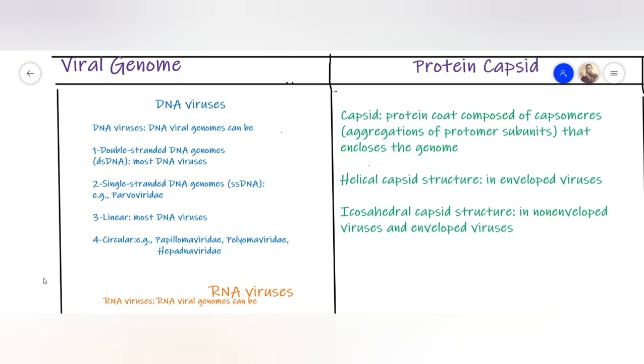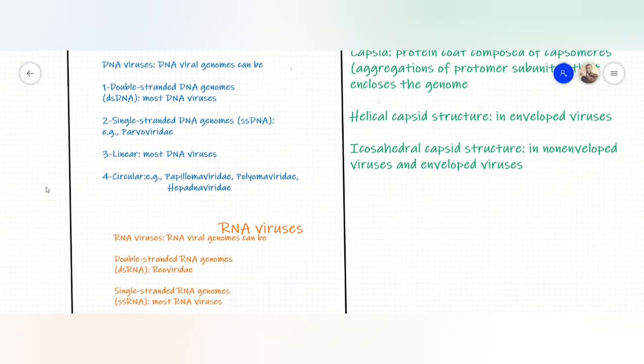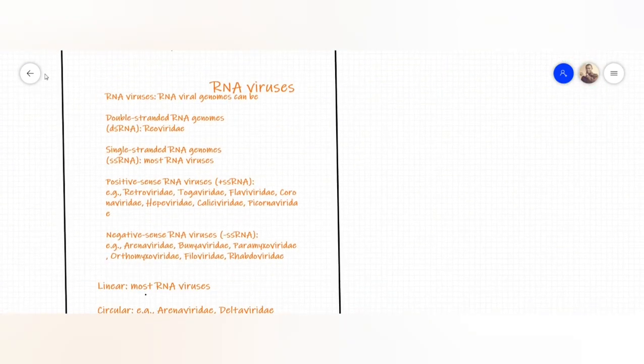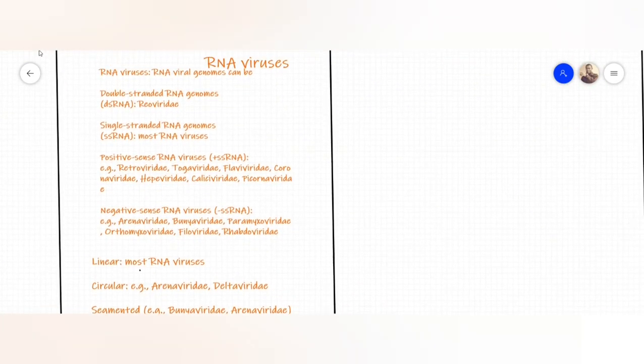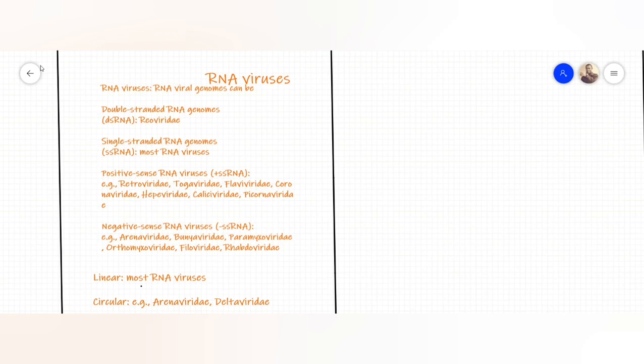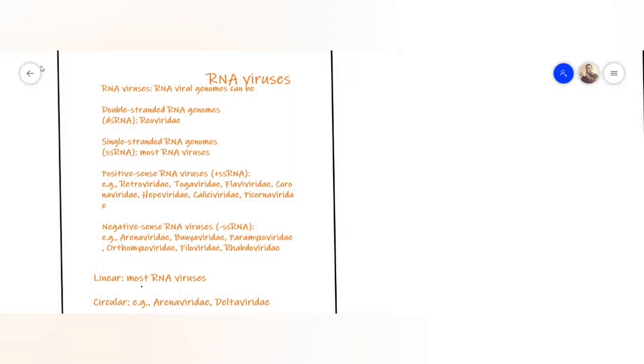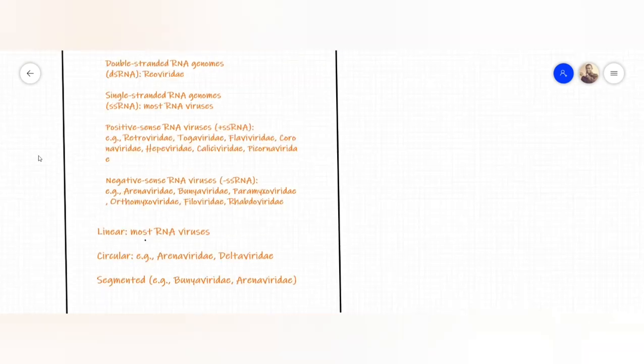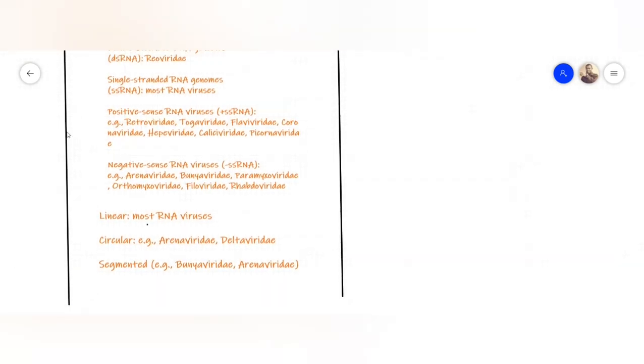Now let's go to RNA viruses. RNA viruses can either be double-stranded, like Reoviridae, but this is an exception because most RNA viruses are actually single-stranded. These single-stranded RNA viruses can be further divided into either positive sense or negative sense.